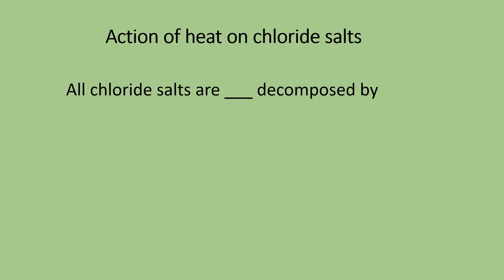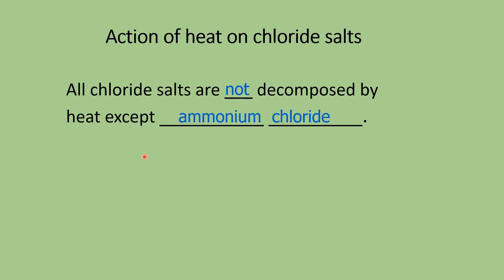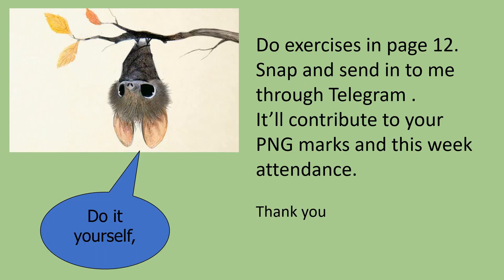Action of Heat on Chloride Salts — all chloride salts are not decomposed by heat, except for ammonium chloride. The equation: ammonium chloride decomposes to produce ammonia gas and hydrogen chloride (HCl). Note the difference — ammonia is NH₃ with neutral charge, while ammonium is NH₄⁺. Combined with Cl⁻ it forms NH₄Cl.